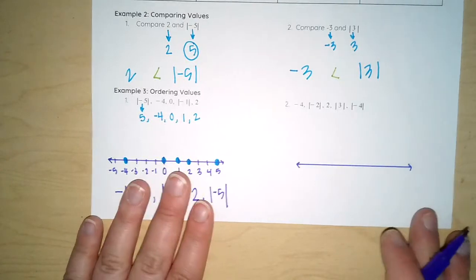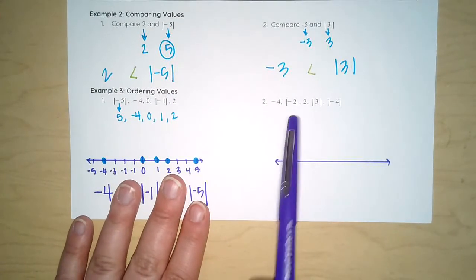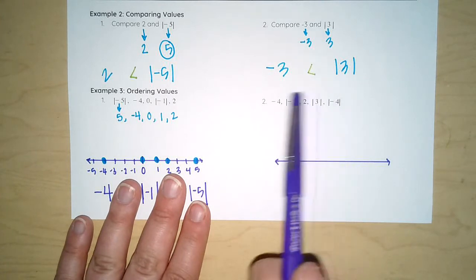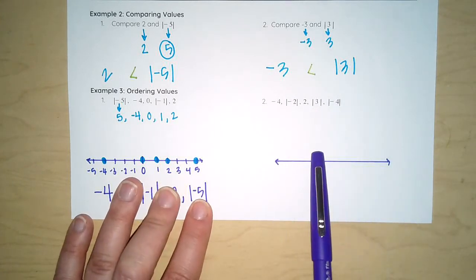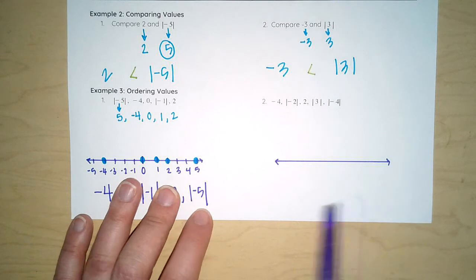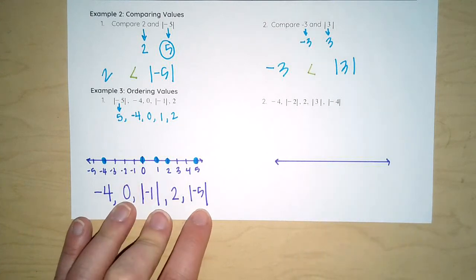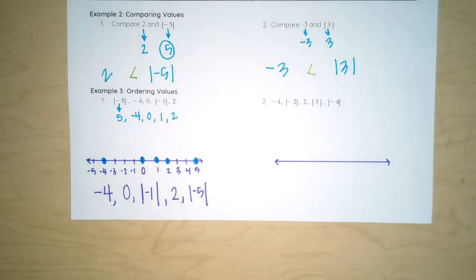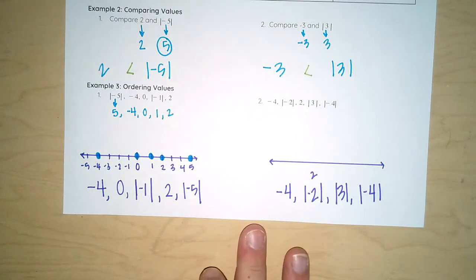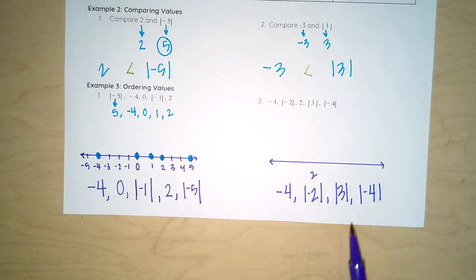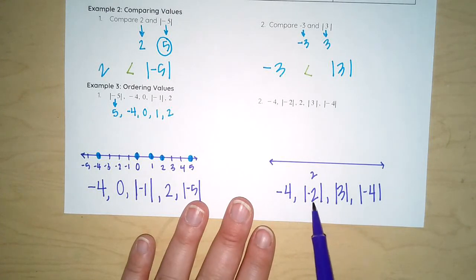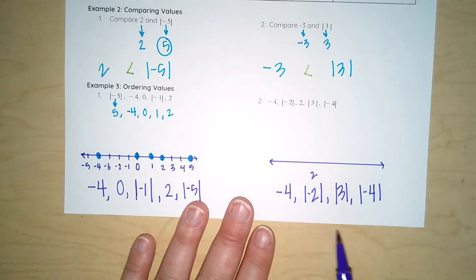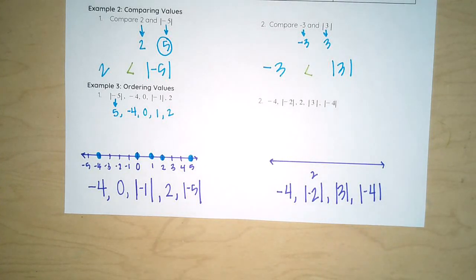We've got one more example here. Why don't you try this one on your own? Go ahead and turn these all into integers, plot them on your number line, and determine the order from least to greatest. Here is your final order. The absolute value of negative two is two, and we already have two. So that can stack on top of each other, but there you have it.